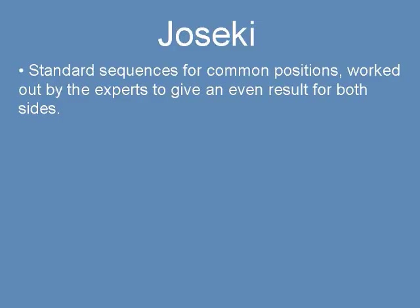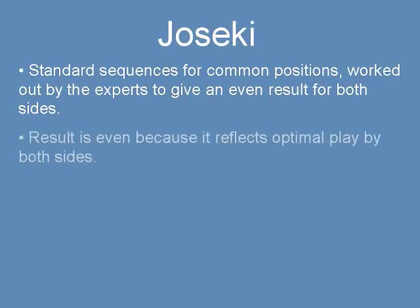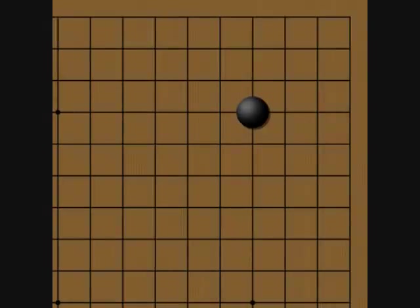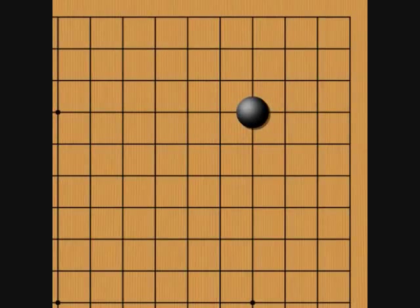Joseki are standard sequences for common positions which have been carefully worked out by the experts to give an even result for both sides. The result is even because it reflects optimal play by both sides, not because the players are just being sporting. Joseki generally apply to opening sequences in the corners, but occasionally you'll find Joseki for common positions that arise in other phases of the game. Joseki can be quite complex, but may be as simple as this sequence.